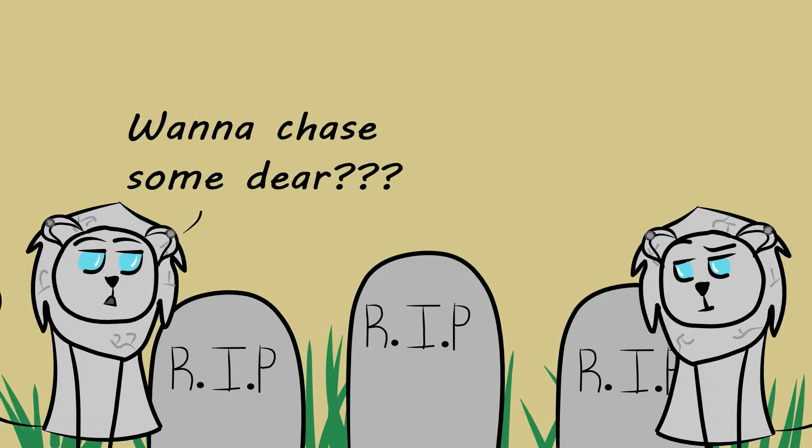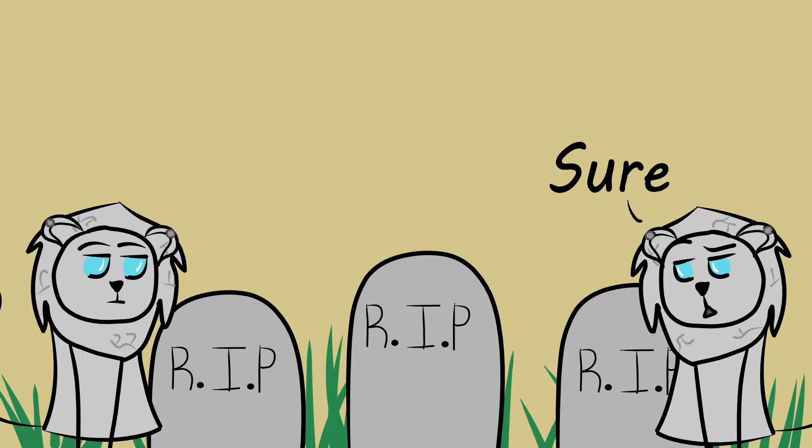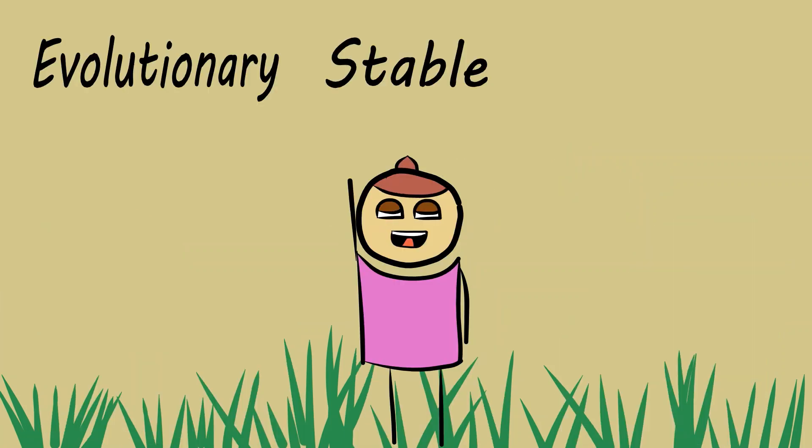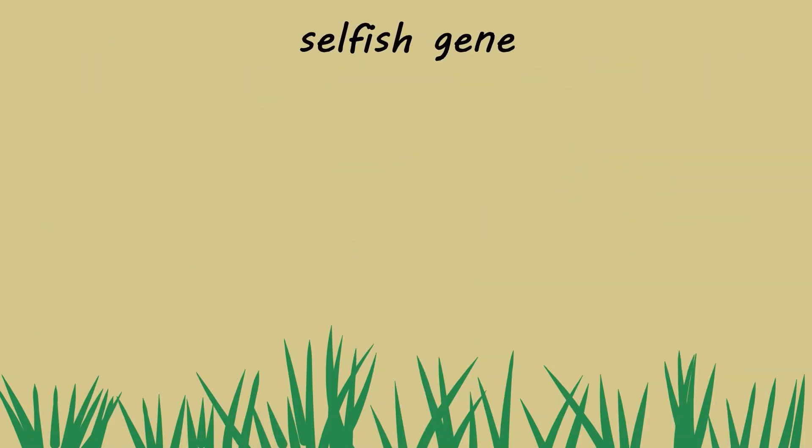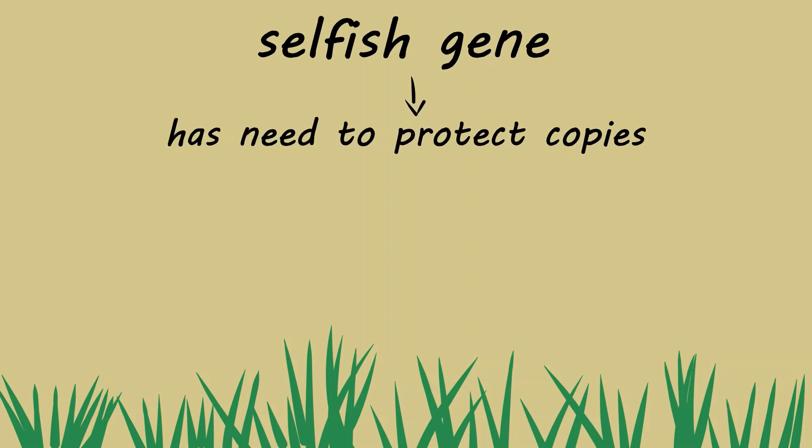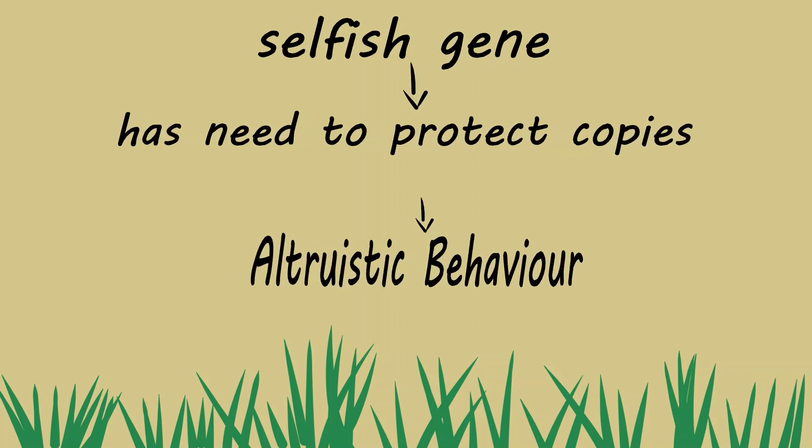All that would be left are the non-cannibalistic lions that are altruistic to each other. This is also called an evolutionary stable strategy. In other words, by the selfish gene looking out for itself and its copies, animals have altruistic behaviors.